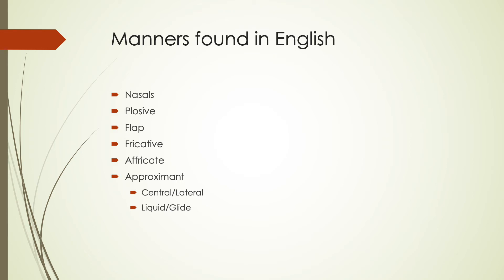Affricates are a combination of a plosive and a fricative together. In English we have two: CH (a T and SH sound combined) and J (a D and a ZH sound combined). Approximants are more open than other consonants — you're approximating a shape in your mouth. Central approximants include the R and W sounds, while lateral approximants like L have air escaping out the sides of your mouth. These same approximants can also be described as liquids (R and L) or glides (W and Y).